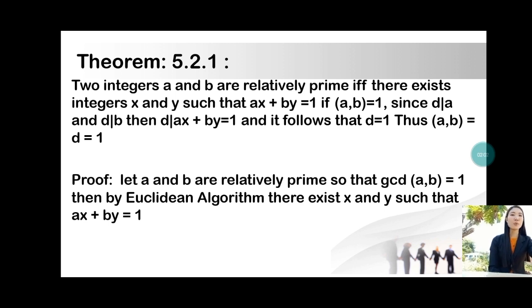For the converse, by the Euclidean algorithm there exist integers x and y such that ax + by = 1.